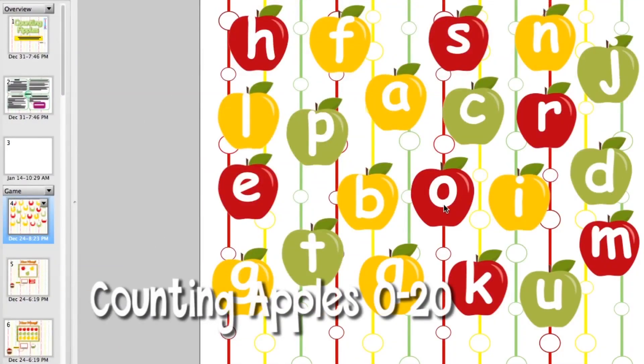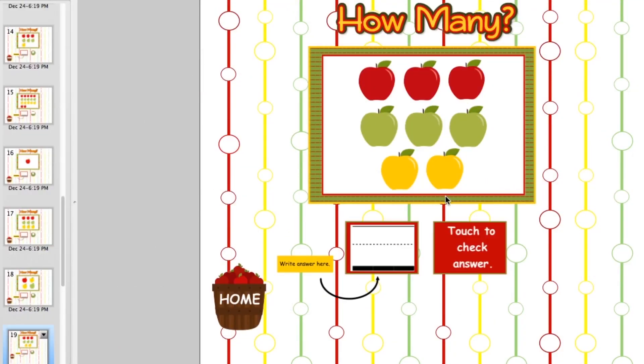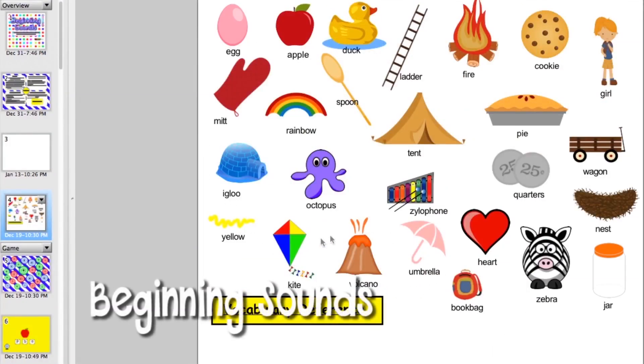Hey there, in this counting apples game students will touch an alphabet apple, count the apples that appear, use a marker to write how many apples there are. Then when they touch the box, audio will actually say the number and also show it for them.